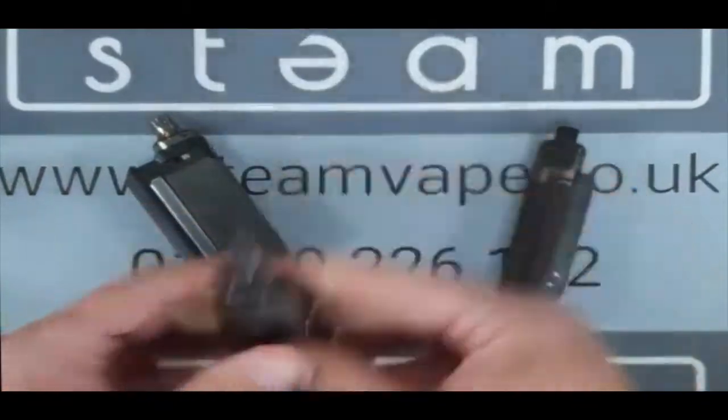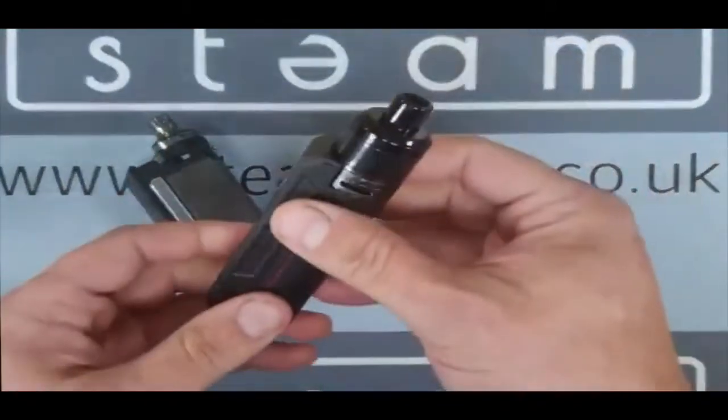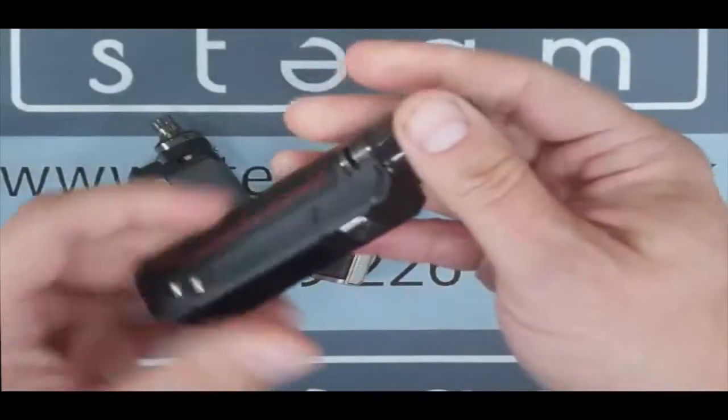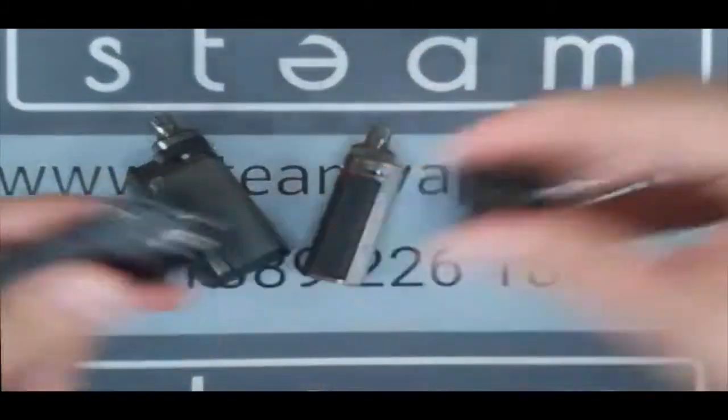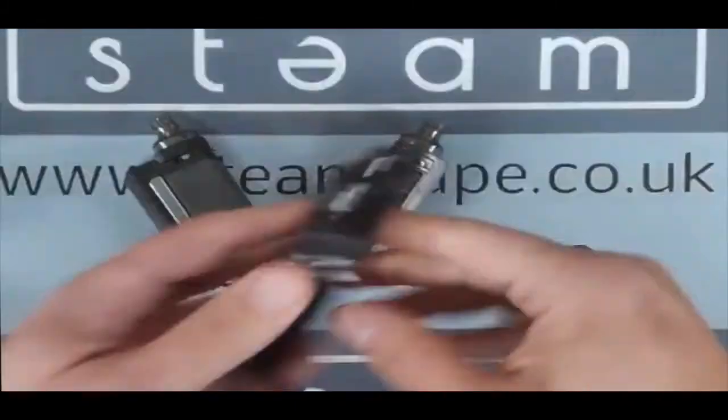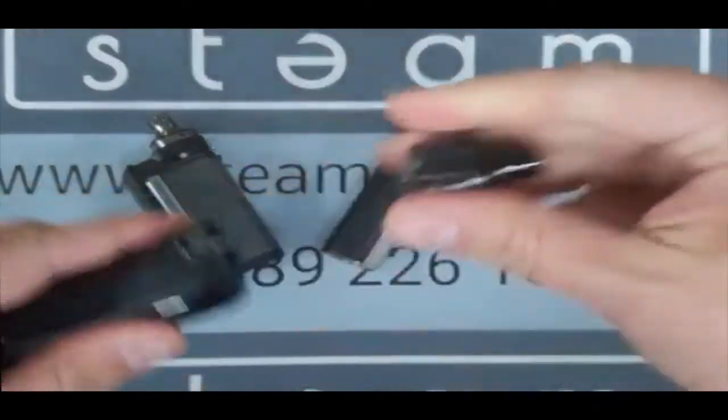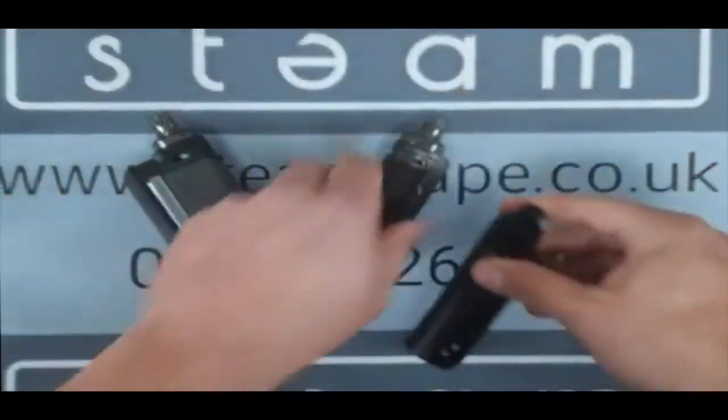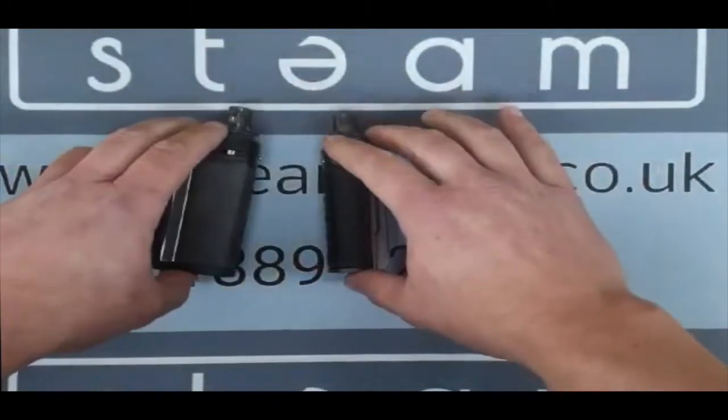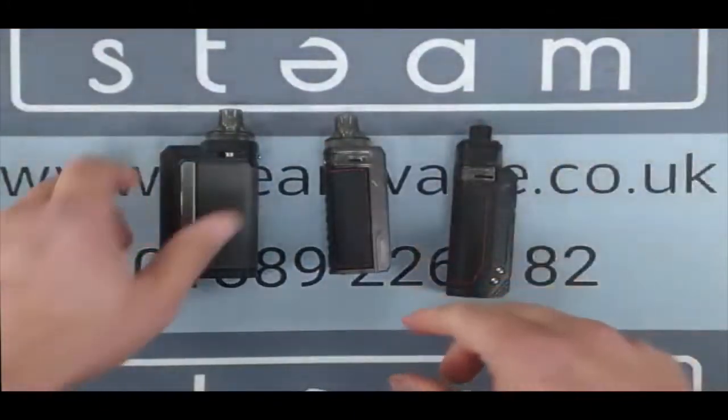And this new one, the Aspire BP80—we've not looked at this properly yet. But they all basically work on the same principle, which is a magnetic pod. You put your liquid in the magnetic pod, every single one of them all exactly the same, and they just attach to the mod with magnets, nice and easy.